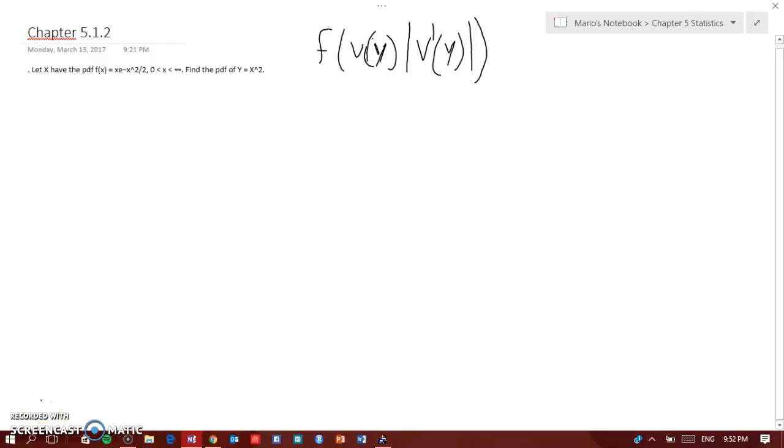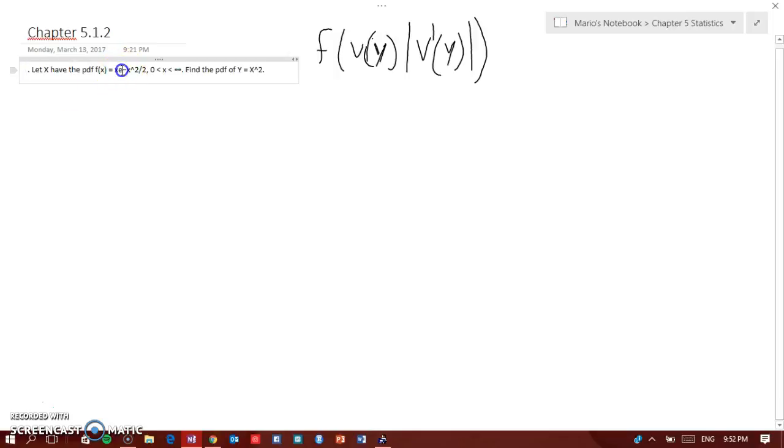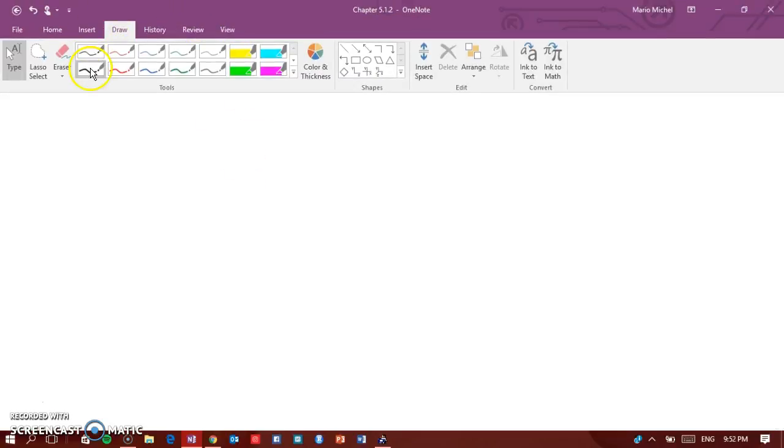All right guys, so let X have the PDF of X times e to the power of negative X squared over 2. Let me quickly put that like this. Okay, that makes more sense. And it says to find the probability, the PDF of Y equals X squared.